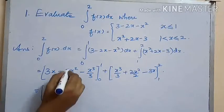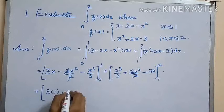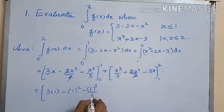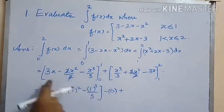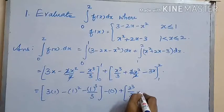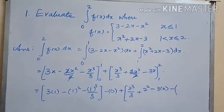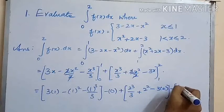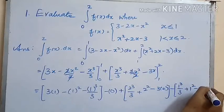Substituting the upper and lower limits: for the first part, we get 3(1) − 1² − 1³/3, and the lower limit is 0 so we have 0. For the second part, the upper limit is 2, giving 2³/3 + 2² − 3(2), minus the lower limit at 1: 1³/3 − 1 + 1² − 3.